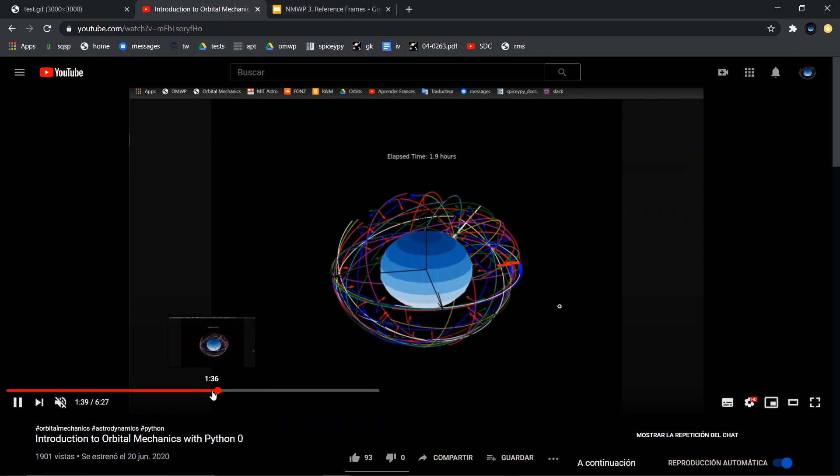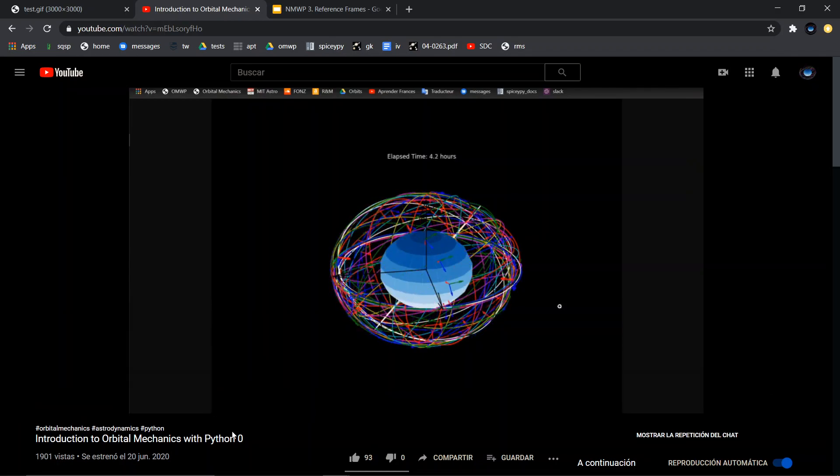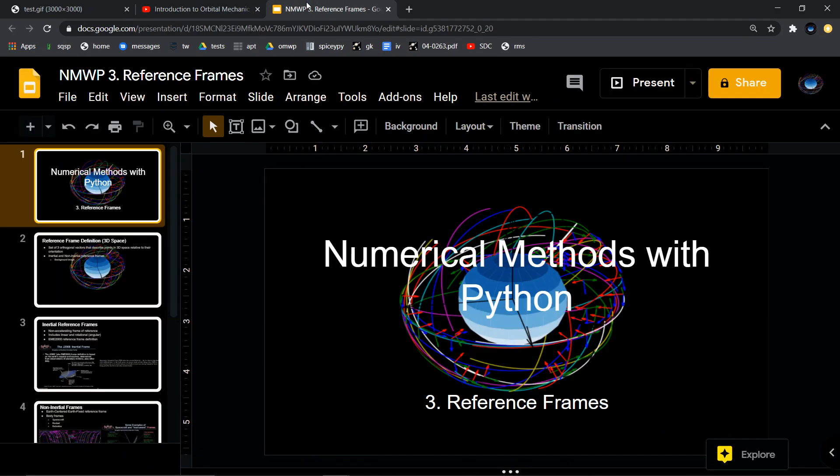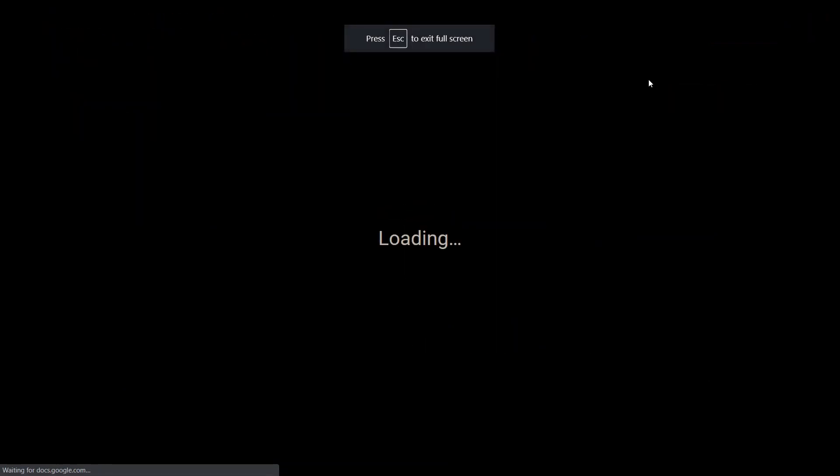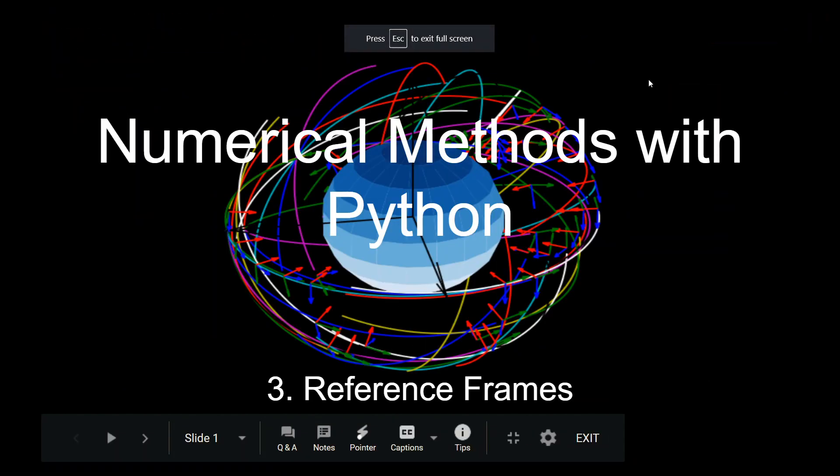Similarly, this is an example of a satellite constellation around Earth and I'll have a link in the description to this video if you want to check these out if you haven't already. This is an introduction to orbital mechanics video that I have.